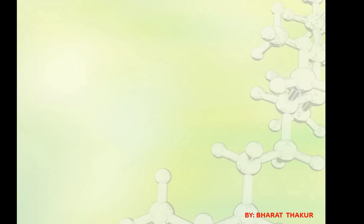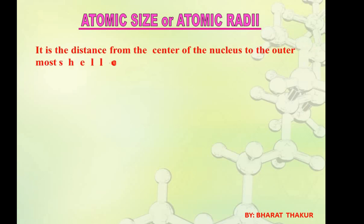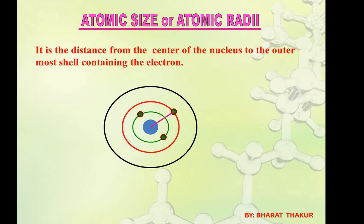Now let's study atomic size, also called atomic radius. The definition is: it is the distance from the center of the nucleus to the outermost shell containing the electrons. We count only the shell which has electrons. If the shell is empty, we do not count it. So the atomic radius extends from the nucleus to whichever outermost shell actually contains electrons — whether that is the first, second, or third shell.